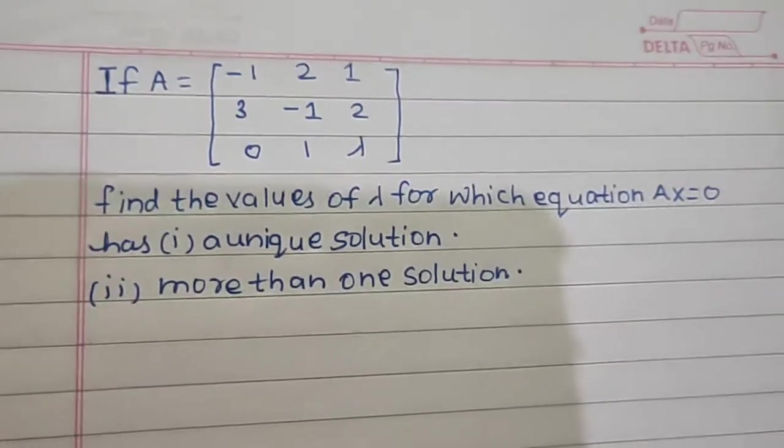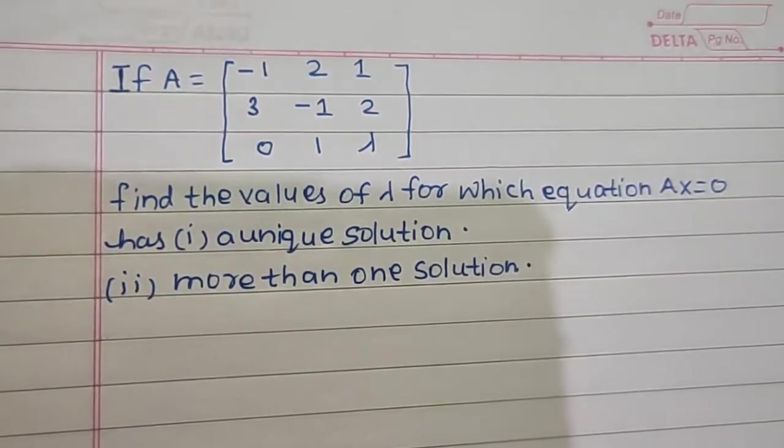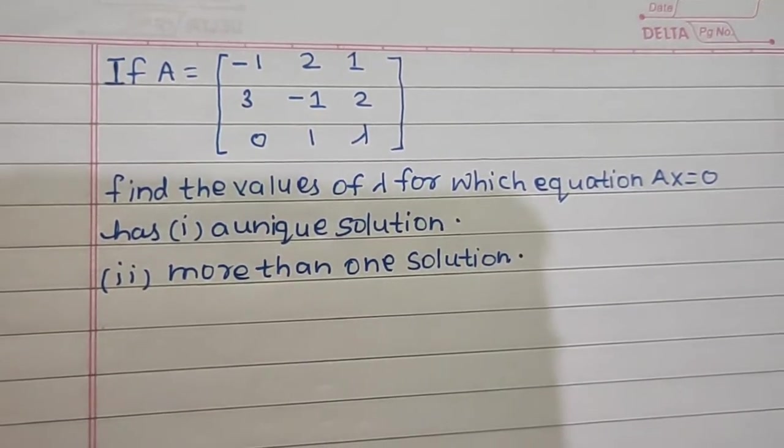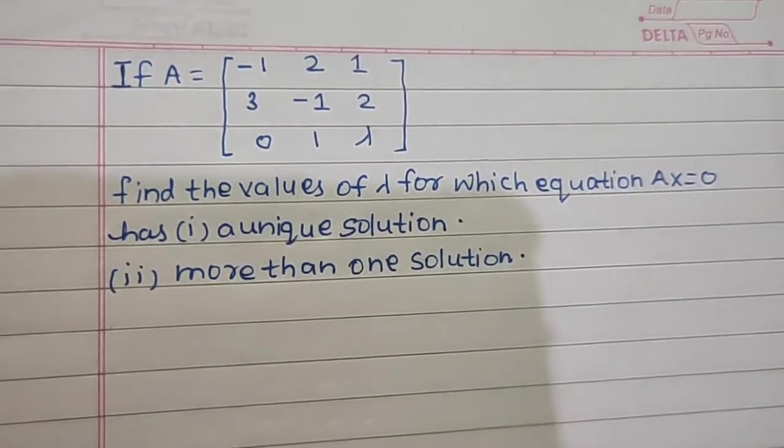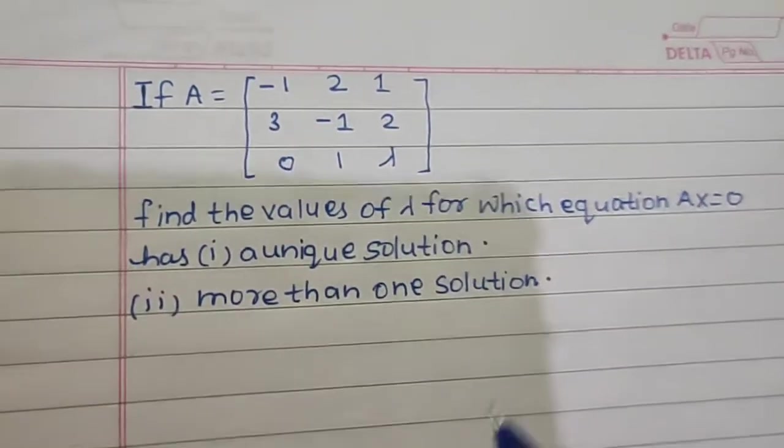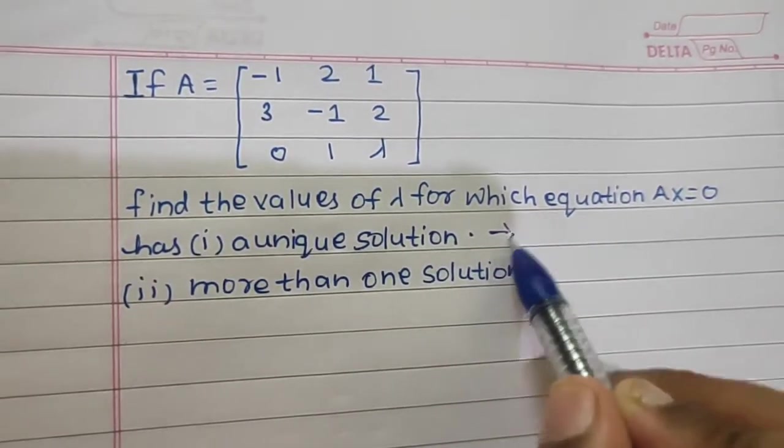Let's look at a problem from matrix. Find the values of lambda for which the equation Ax equals 0 has a unique solution, and second one is more than one solution. So first of all we should convert this into our understanding.